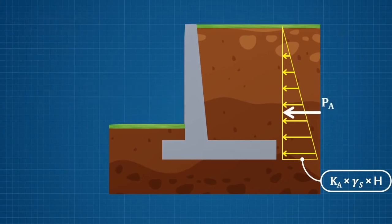The pressure PA acts at the centroid of the active earth pressure. This centroid is at a distance of H over 3 from the base of the retaining wall.